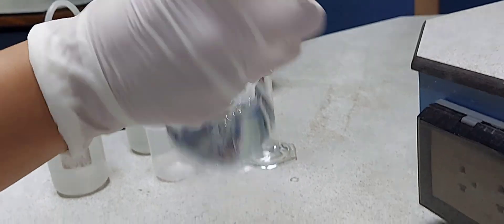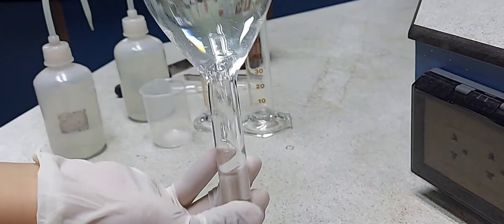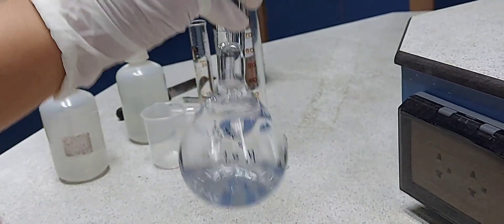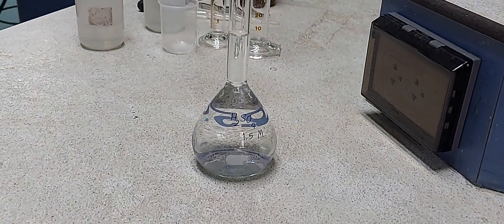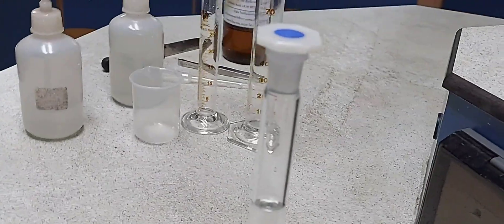And thus you have diluted the 18 molar concentrated H2SO4 to 1.5 molar H2SO4. So this is the procedure to dilute the acid.